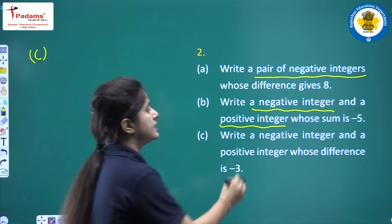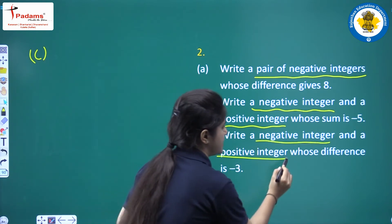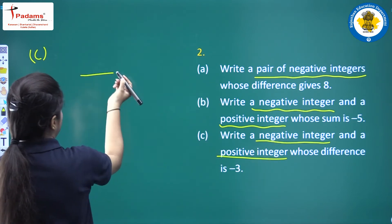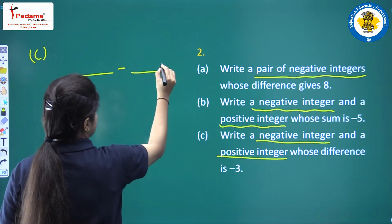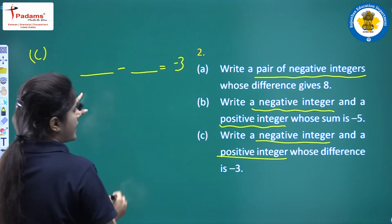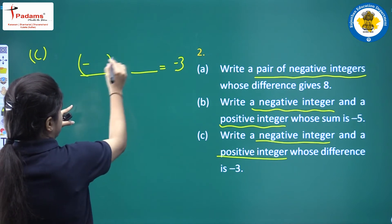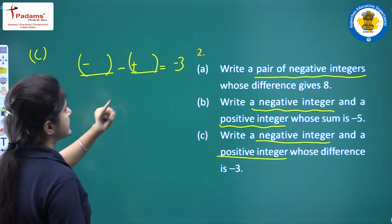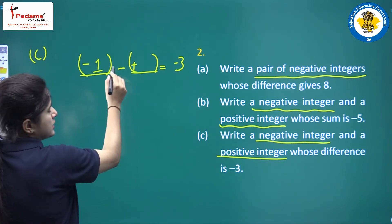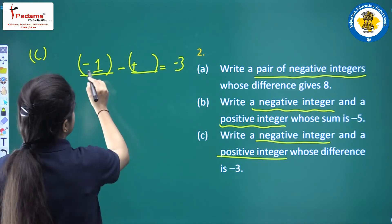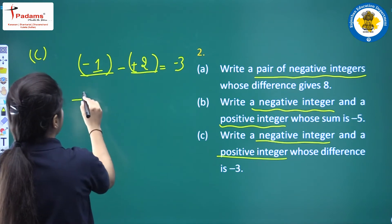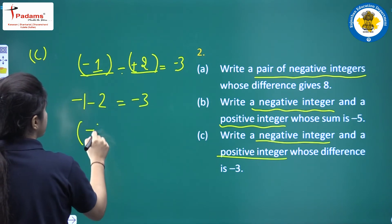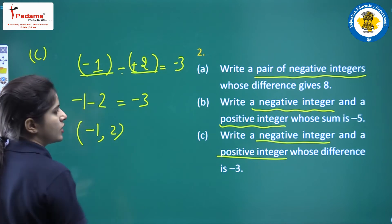Part c: write a negative integer and a positive integer whose difference is minus three. The first should be negative and the second positive. Taking minus 1 and 2, minus 1 minus 2 equals minus 3. So the pair of integers is minus 1 and 2.